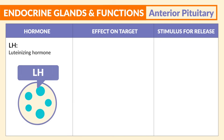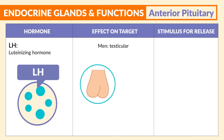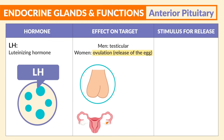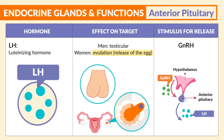Next is LH, the luteinizing hormone. For men, its function is in testicular function. And for women, this is the most important part — it plays a key role in ovulation, the release of the egg. And the stimulus is GnRH, once again.